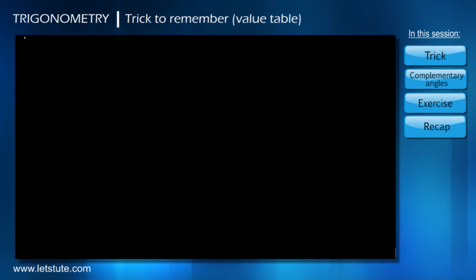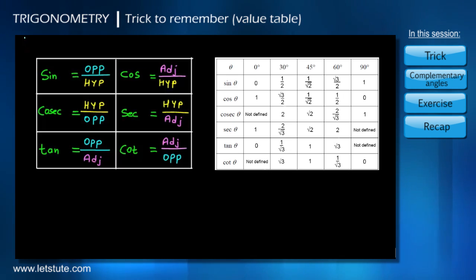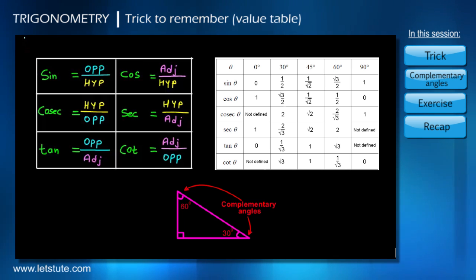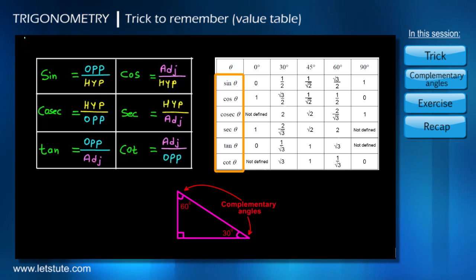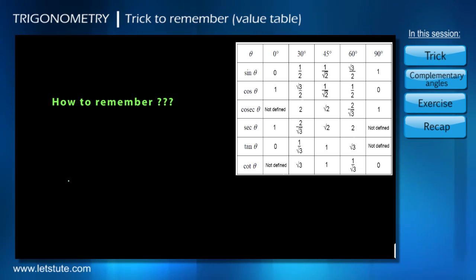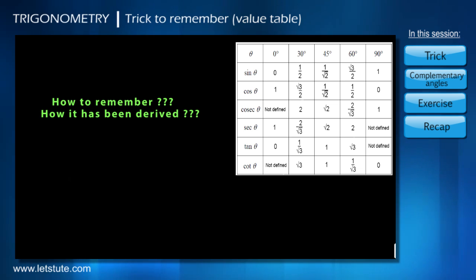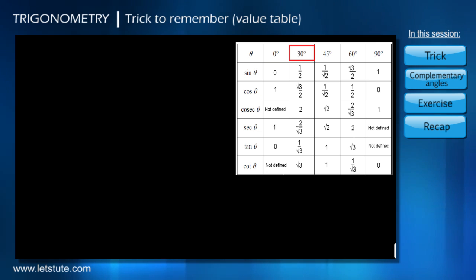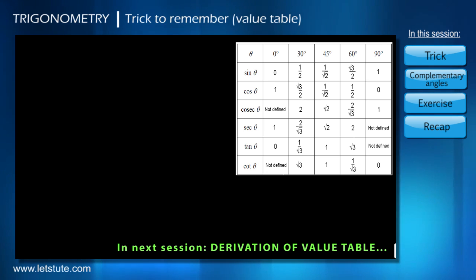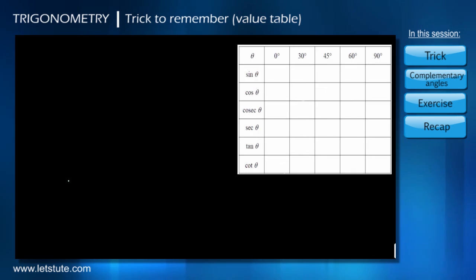Hello everyone. In two previous sessions of trigonometry we have learned about the trigonometric ratios value table and complementary angles. In both previous sessions we used the value table for trigonometric ratios, but you may be thinking about ways to remember this value table and how it has been derived. So now in this session we will learn a simple trick to remember this value table for commonly used angles. Let me keep this table blank because I am going to show you the way to fill these blank spaces.